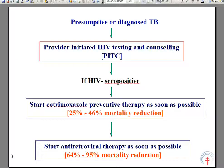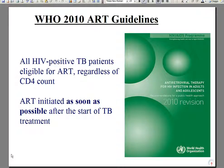Finally, under Theme C, the algorithm for managing patients with tuberculosis involves provider-initiated HIV testing and counselling for all patients. If found to be HIV seropositive, we start cotrimoxazole preventive therapy — a simple antibiotic which reduces mortality in its own right — and then antiretroviral therapy, which reduces mortality between 65 and 95%. Both cotrimoxazole and antiretroviral therapy have a synergistic effect. The WHO 2010 ART guidelines recommend that all HIV-positive TB patients are eligible for antiretroviral treatment regardless of CD4 count, and that ART is initiated as soon as possible after the start of TB treatment.